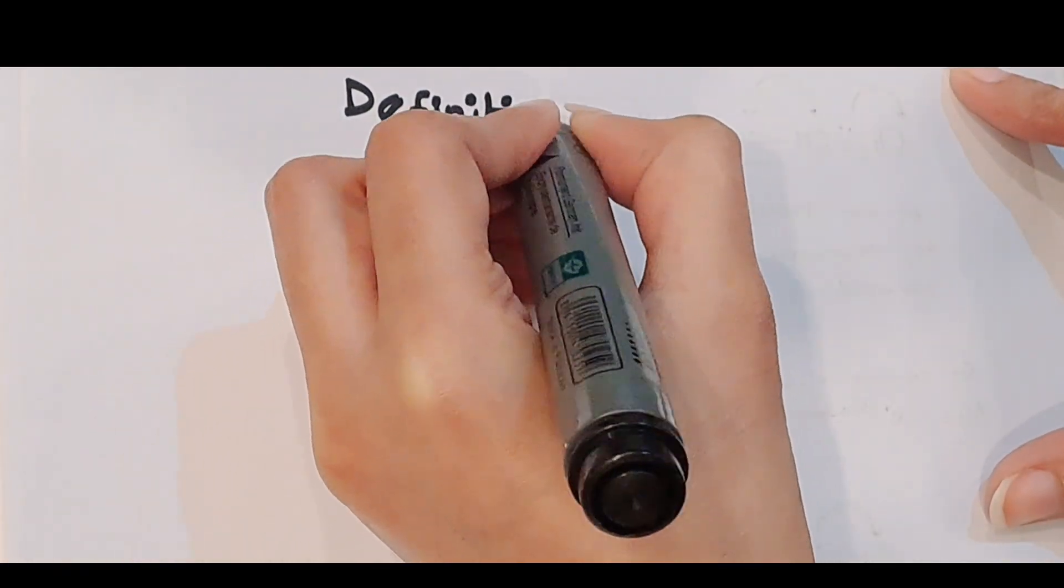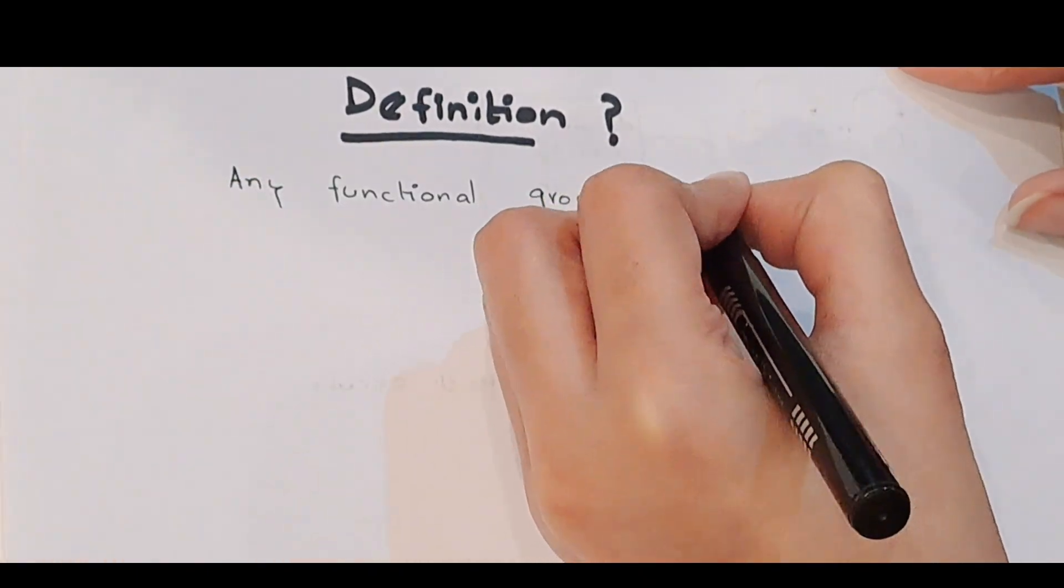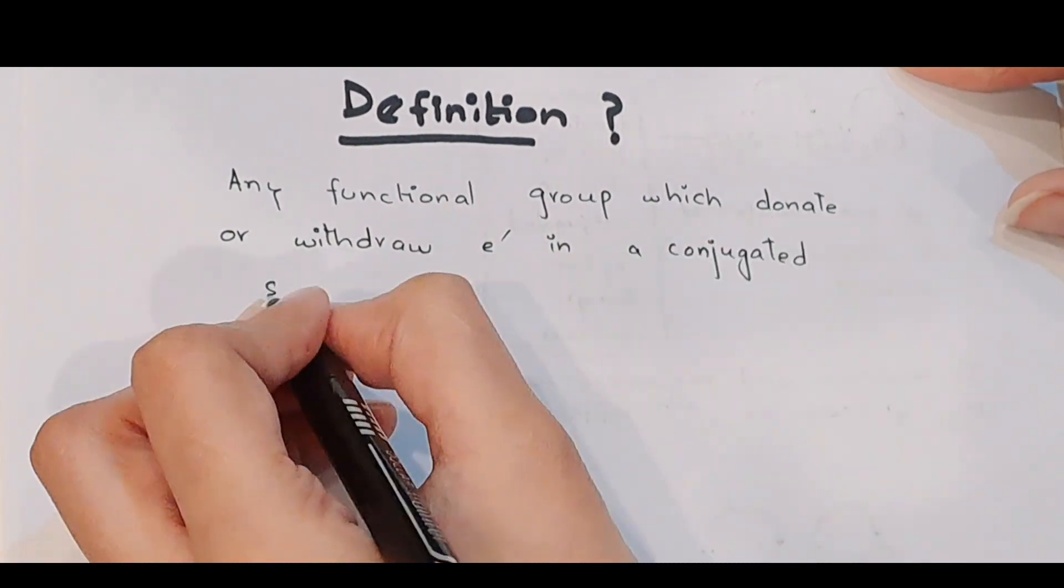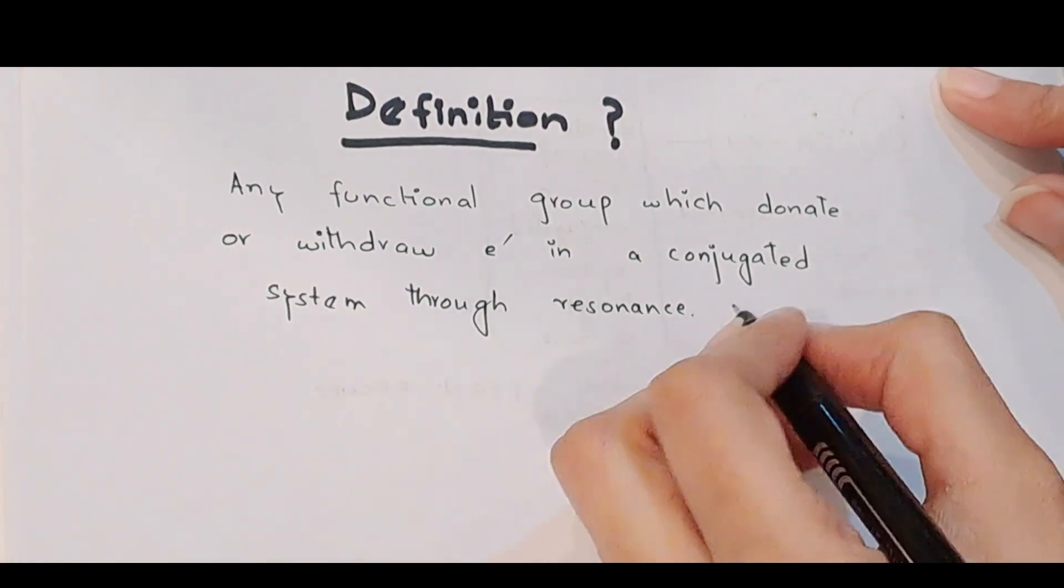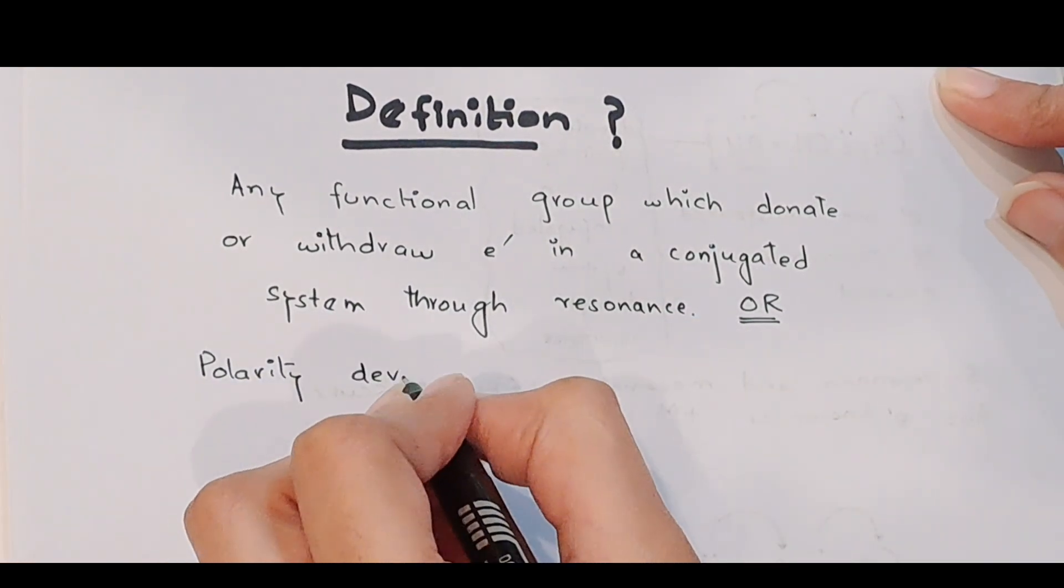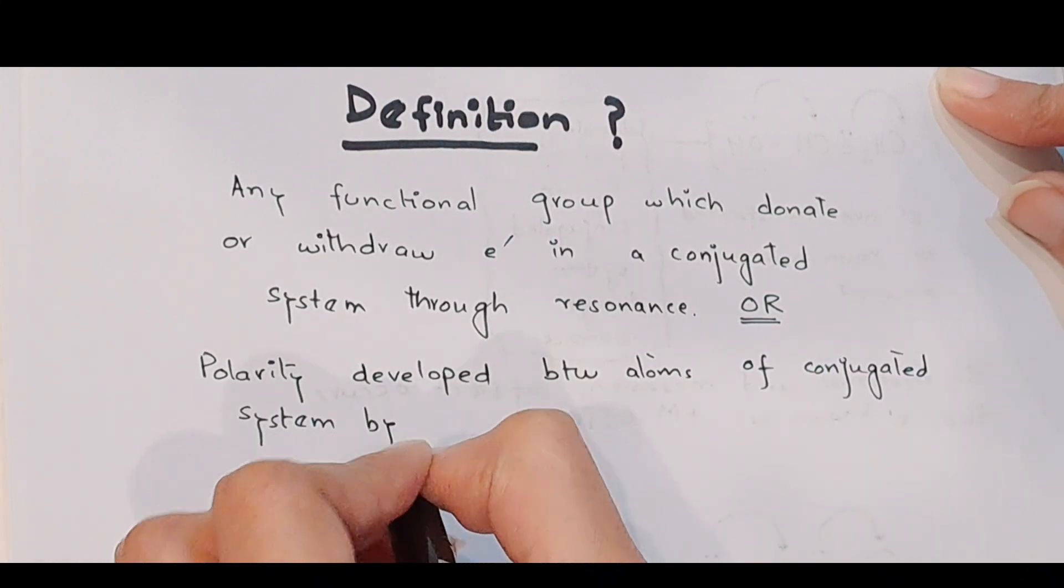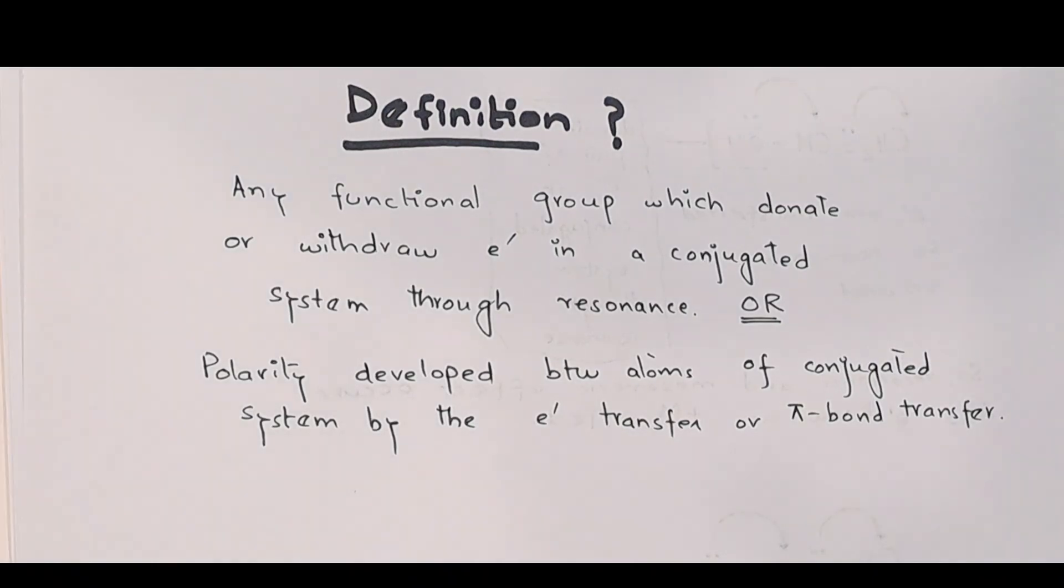At the end of the topic we can define mesomeric effect as any functional group which donates or withdraws electrons in a conjugated system through resonance. We can have another definition: polarity developed between atoms of a conjugated system by the electron transfer or pi bond electron transfer.